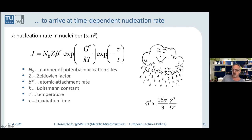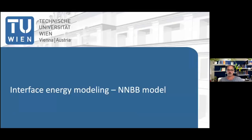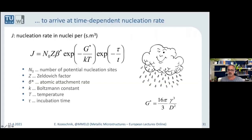The most important quantity is G*, and G* contains interface energy and chemical driving force. The effective driving force D is a thermodynamic quantity that you can calculate from computational thermodynamics — ThermoCalc, Pandat, whatever Gibbs energy minimizer and thermodynamic database you have. Gamma, the interface energy, is the much more interesting part because it's not so clearly established in the community that gamma is not a fitting quantity but one that you can really predict from basics.